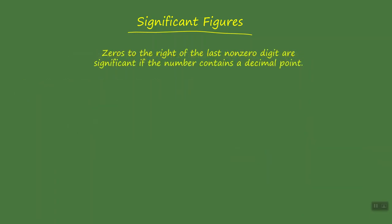Our fourth guideline is: zeros to the right of the last non-zero digit are significant if the number contains a decimal point. Take a look at our first example: 46.00. The number contains a decimal point. The last non-zero digit is six. All the zeros to the right of it are now significant, so this number contains four significant figures.